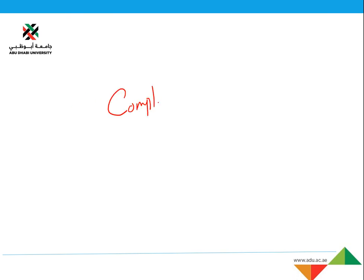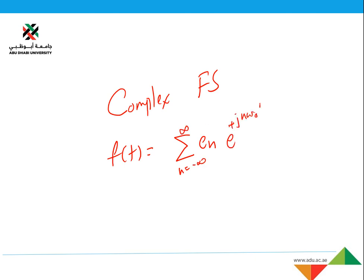Welcome back class. Last time we learned about the first form of the Fourier series, which was the complex Fourier series form. It has coefficients from minus infinity to infinity: a_k times e to the power plus j*n*omega_0*t. We calculate the coefficient value and we can represent any periodic signal in the complex Fourier series representation.